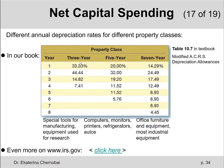It's always given which property class an asset falls into. A three-year property class typically includes special tools for manufacturing equipment used for research. Five-year property class assets include things like computers, monitors, printers, refrigerators, and cars. Seven-year property class includes assets like office furniture, equipment, and most industrial equipment.